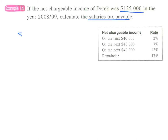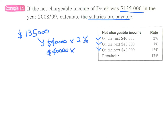We need to split the net chargeable income into several parts based on the numbers in the tax bands. So this becomes $40,000 times 2%. And then on the next $40,000, we have 7%. And again, for the next $40,000, the rate is 12%. And finally, the remaining $15,000, since we know that $40,000 plus $40,000 plus $40,000 plus $15,000 adds up to $135,000.